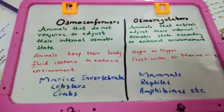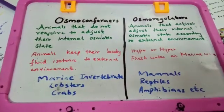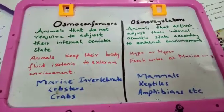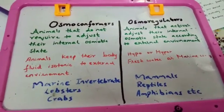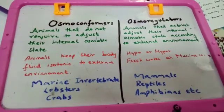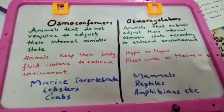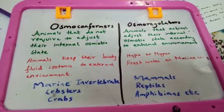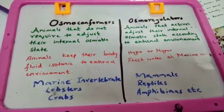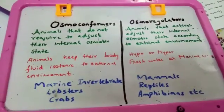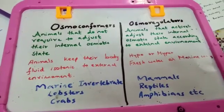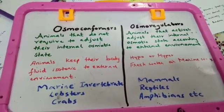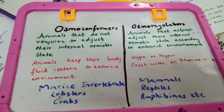So they face problems: the problem of dehydration or the problem of flooding, meaning the problem of over-swelling of their cells. If the organism is hypertonic, then there is a chance that water from the environment goes inside their body and their cells swell up.